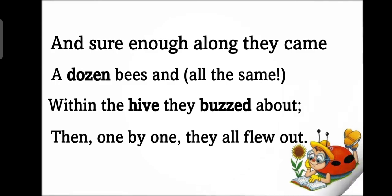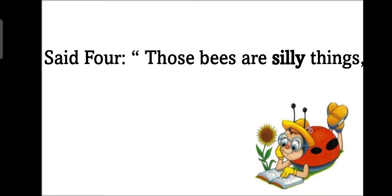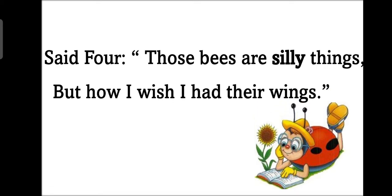Then one by one they all flew out. Phir ek ke baad ek sari baahar hive se baahar ud gai. Said four, jo four year ka bachcha tha, those bees are silly things. Yeh jo bees hai woh kya hai silly things hai, it means foolish things hai. But how I wish I had their wings. Lekin mein phir bhi yeh iksha rakhta hoon ki mere paas bhi inke jaise wings hoon. I really hope you all understand the poem meanings and also learn this poem easily.